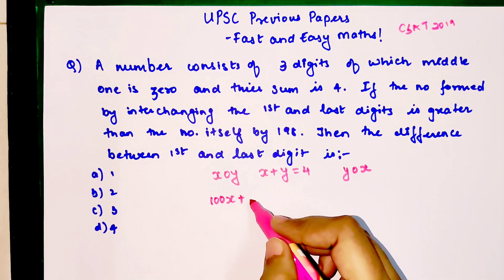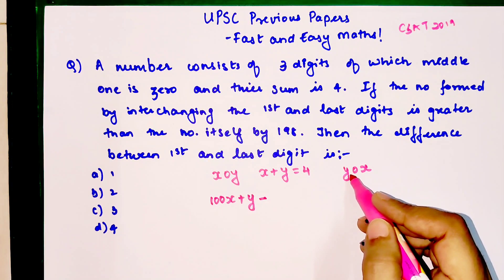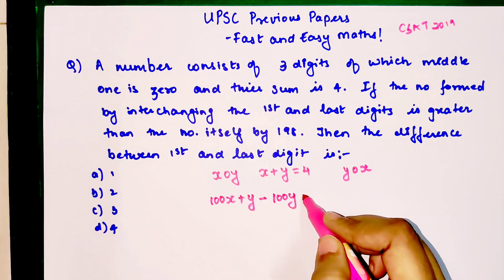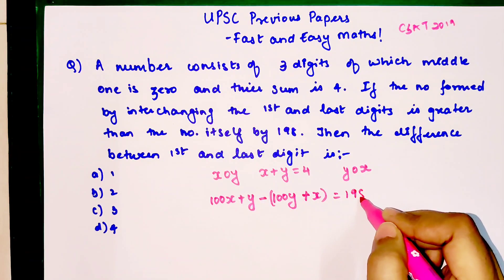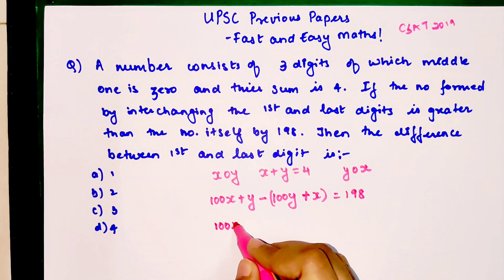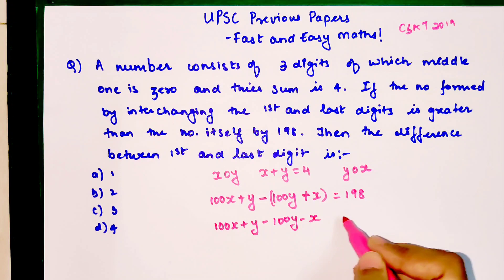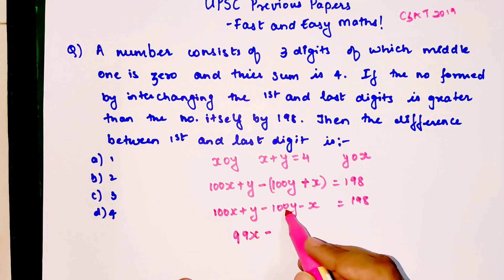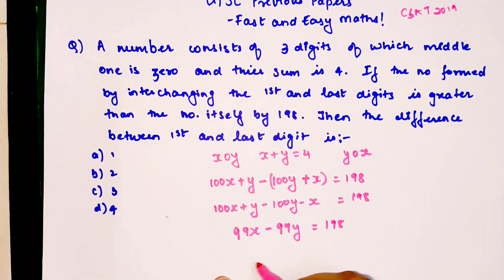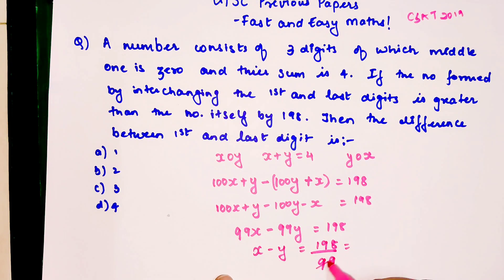So 100x plus y minus 100y minus x equals 198. If you open this we have 100x plus y minus 100y minus x equals 198, which gives us 99x minus 99y equals 198. Taking 99 common, we have x minus y equals 198 divided by 99, which equals 2.